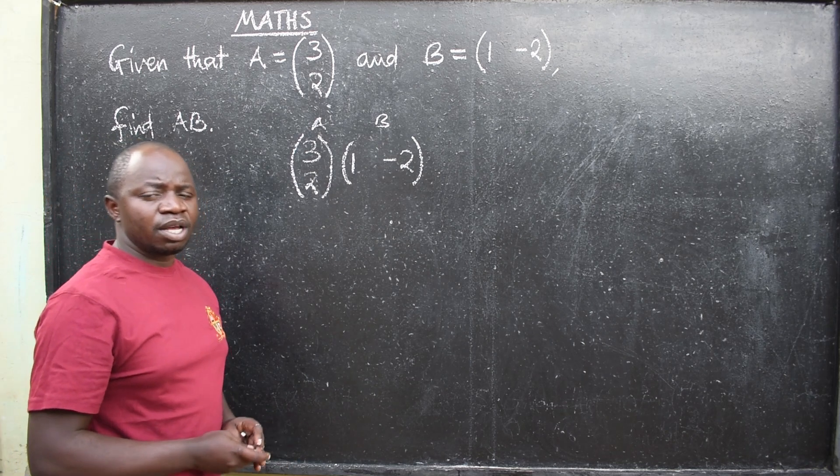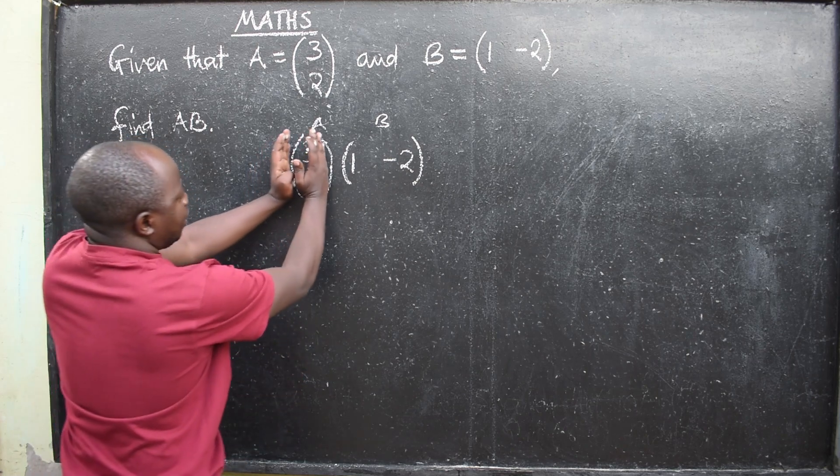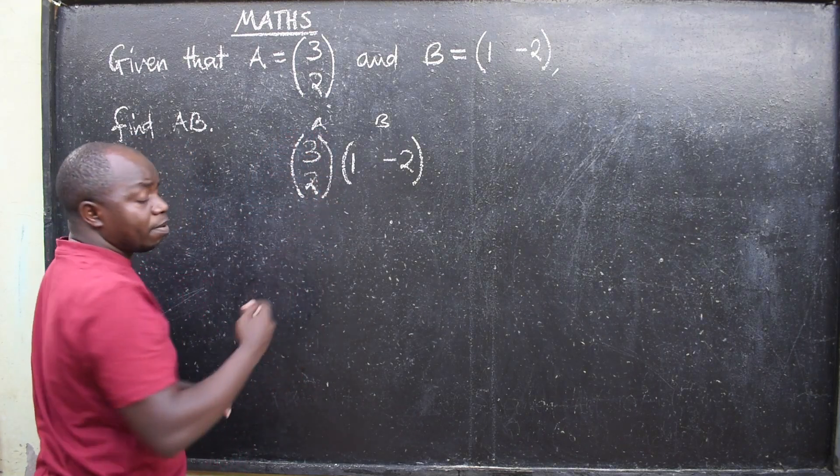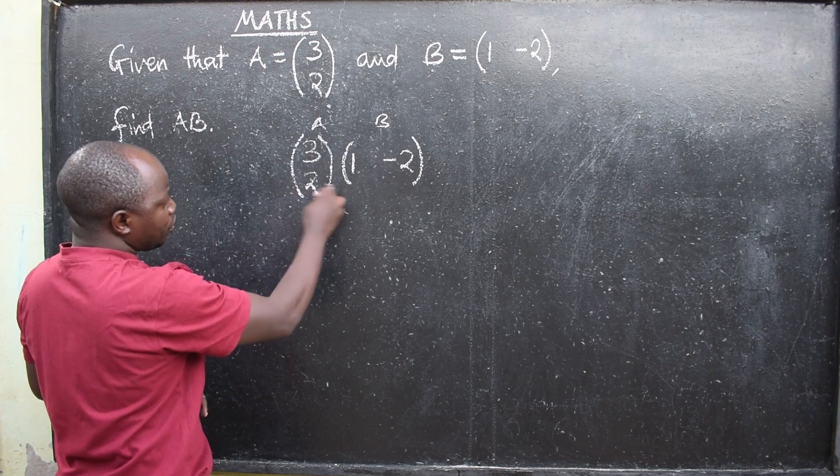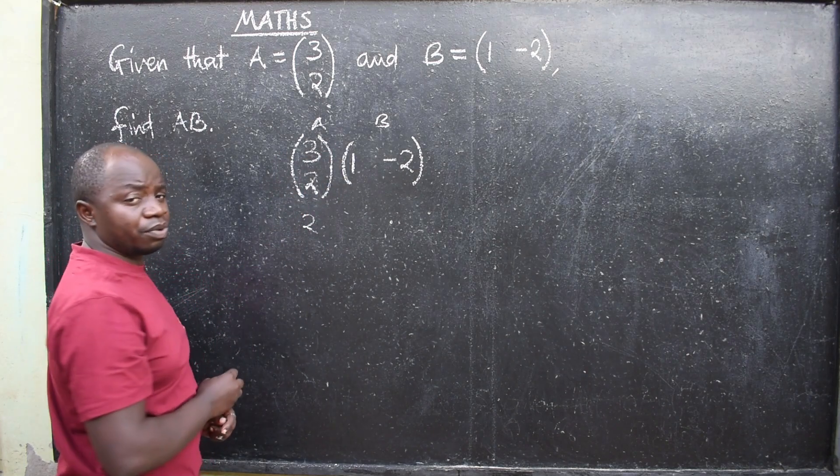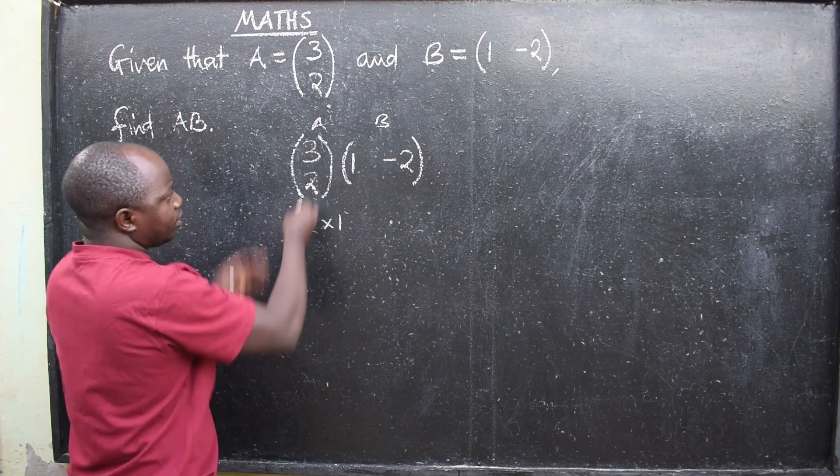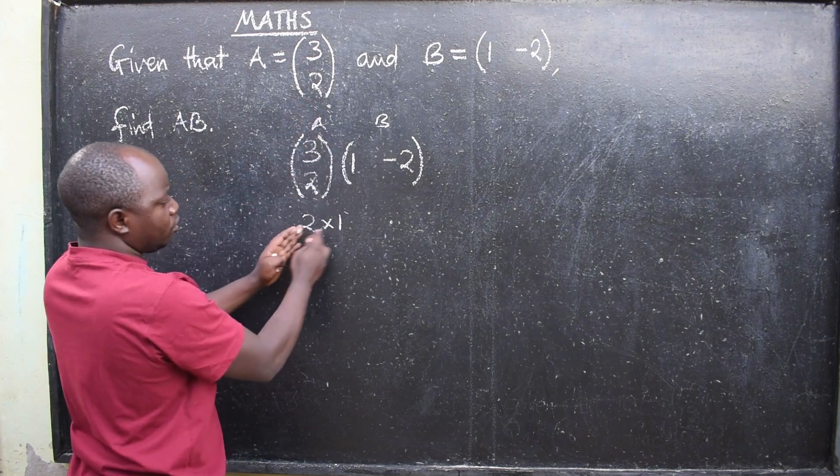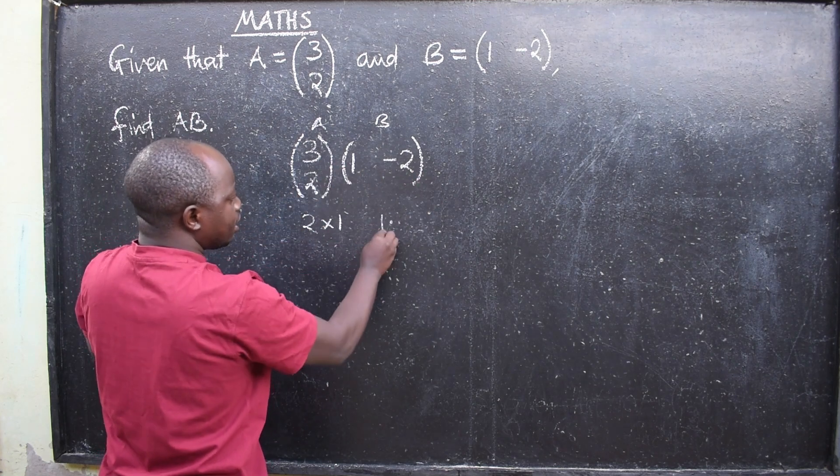Now how do we multiply matrices? The first thing you need to do is to write their orders. What is the order of this matrix? Remember, order means row by column. So there are 2 rows multiplied by how many columns? 1, just 1. So the order of matrix A is 2 by 1.